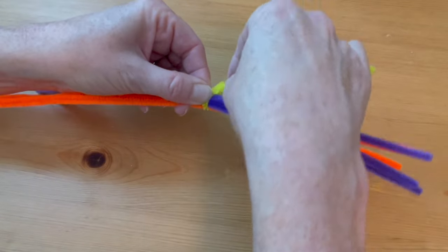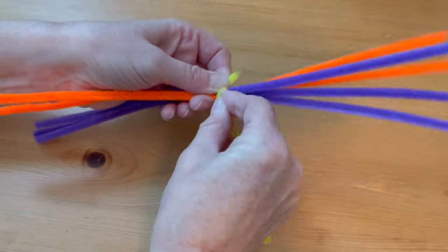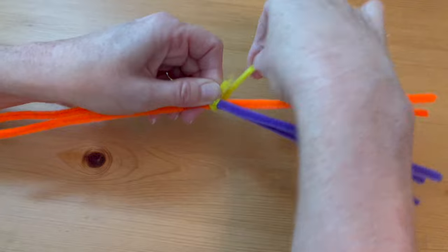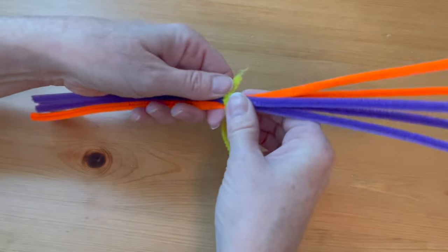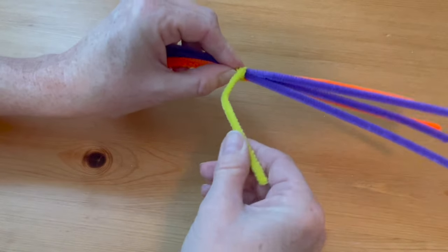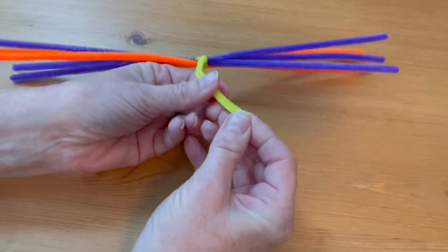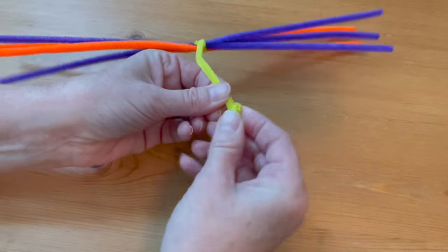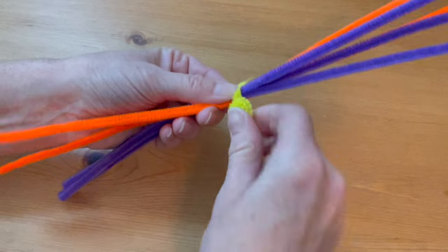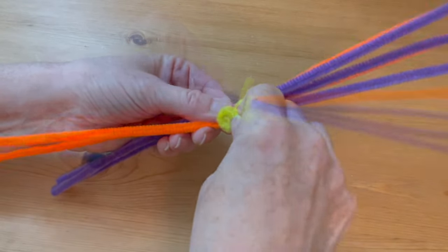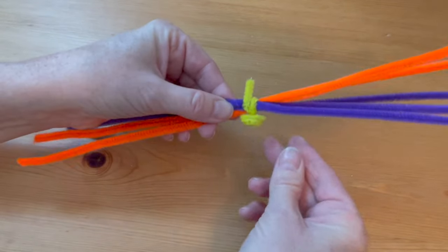Now with the longer end, coil it down tightly until you reach the center of the pipe cleaners. This will be the flower center. Coil it till it sits right on top of the connecting part. Make sure that the coils are on one side and the tail is pointing down.